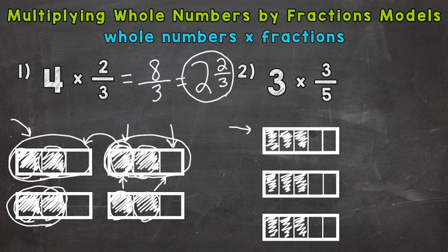So there, we have three groups or three times three-fifths. Let's see what our improper fraction is going to be. So one, two,